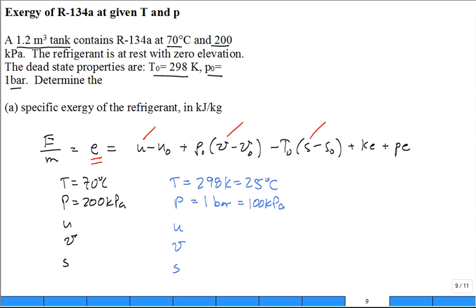Let's go ahead and substitute some numbers. When we look up the property for the internal energy here, it's 286.74 kilojoules per kilogram. For the specific volume, 0.13639 meters cubed per kilogram. And for the specific entropy, 1.1661 kilojoules per kilogram Kelvin.